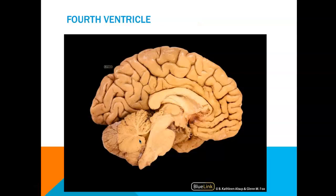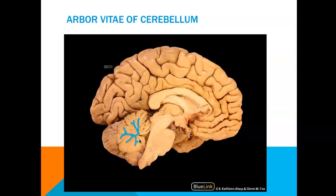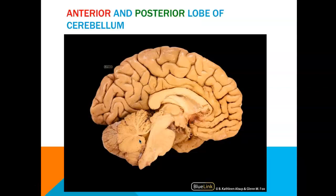Your fourth ventricle is the space located anterior to your cerebellum and posterior to the pons. We have your arborvitae, called the tree of life — these fibers are myelinated axons, which is why you will see white matter moving into the cerebellum. We also have three different lobes of the cerebellum, but the two you are responsible for in lab are the anterior lobe and the posterior lobe.